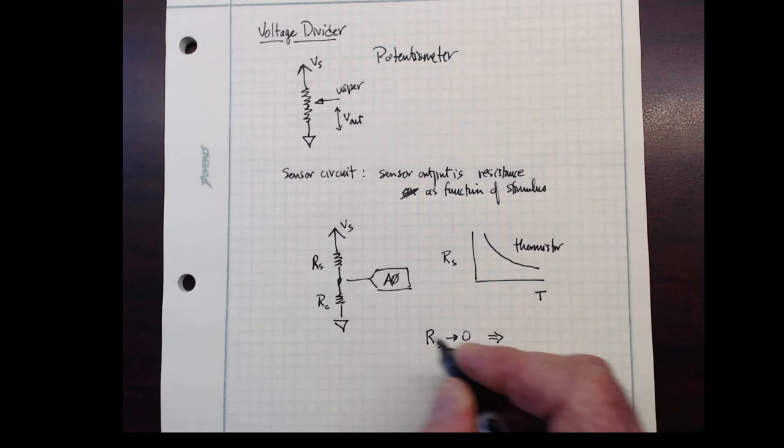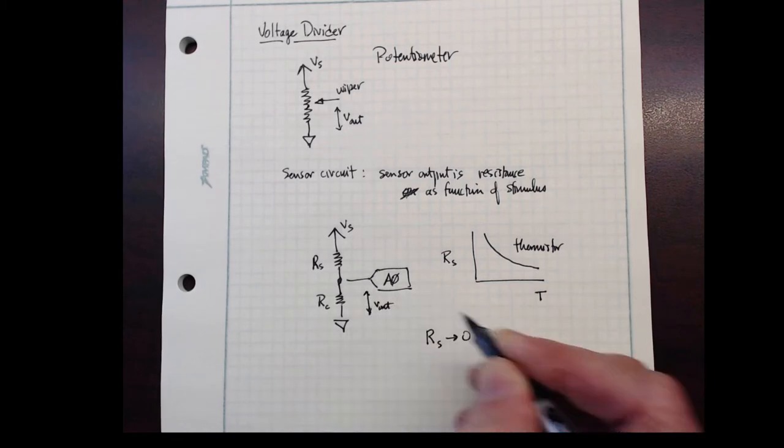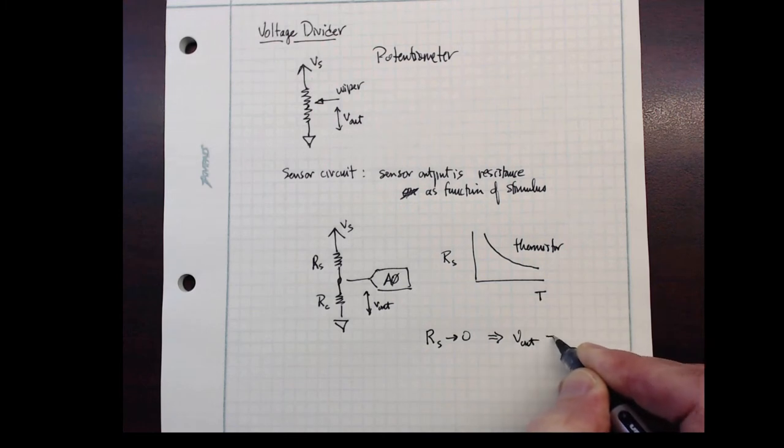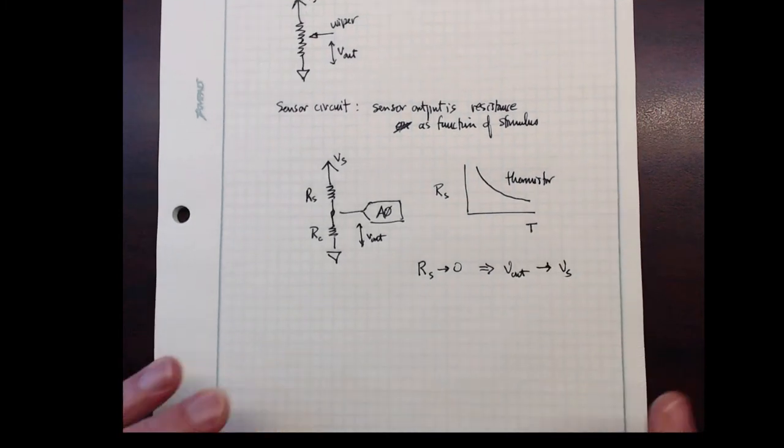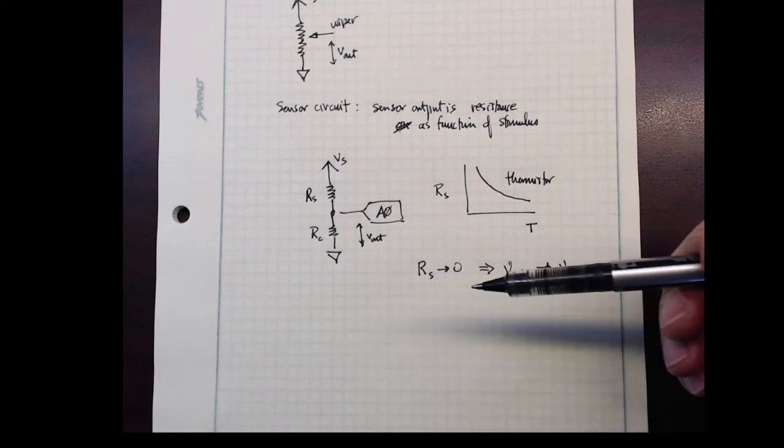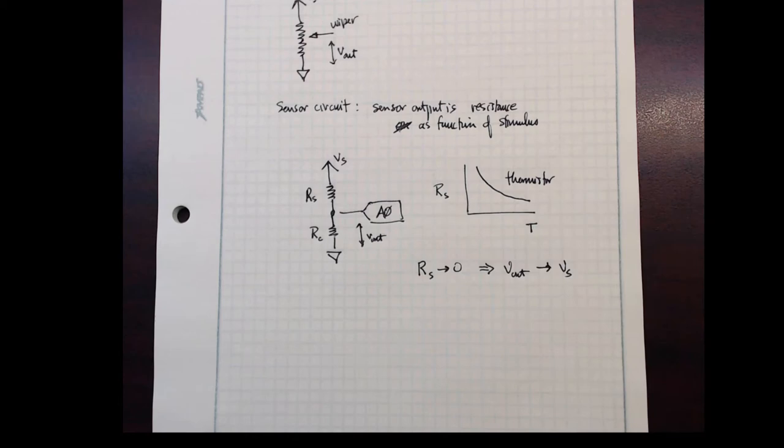That means that the output voltage, which is measured here, Vout goes to Vs. So this is a natural sense that the increased stimulus means an increased voltage output.